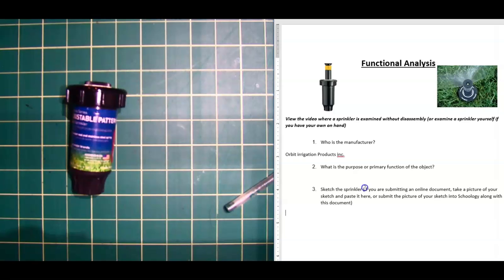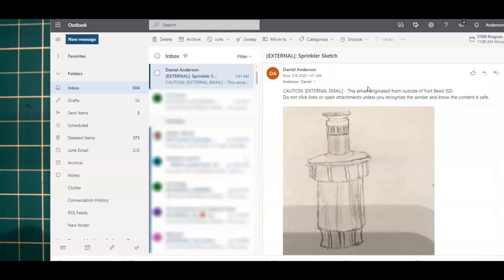But real quick, let me show you how to take a picture that you took on your phone and paste it into a document like this one. And so if you look, I actually already sketched this out, took a picture of it and emailed it to myself. And so that's all I did. I took my email on my phone and I emailed the picture to myself.